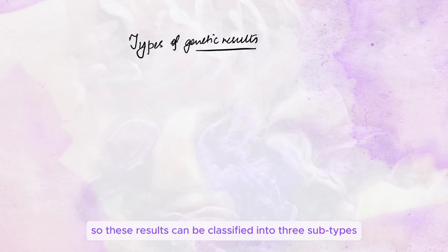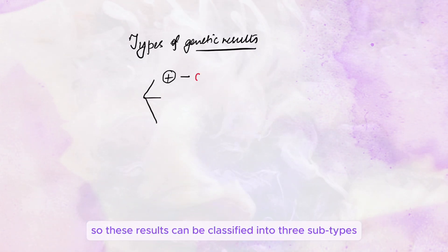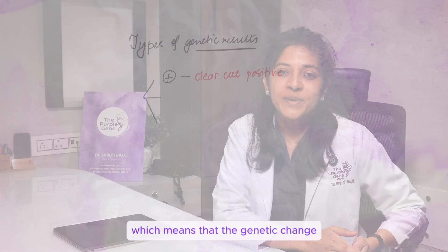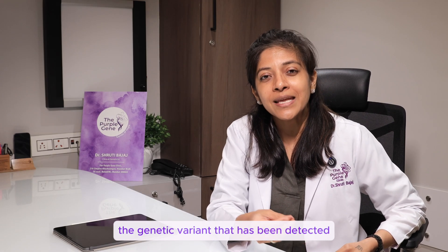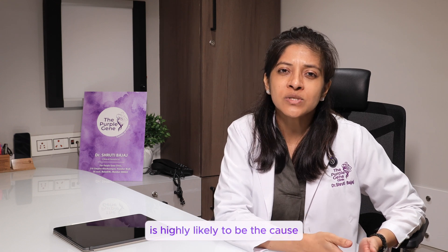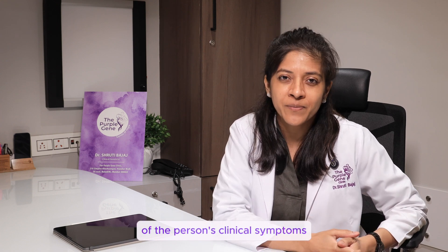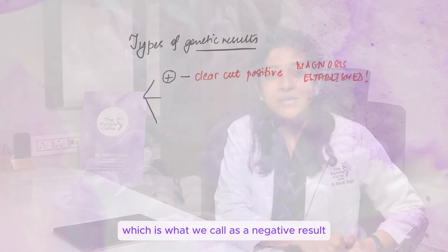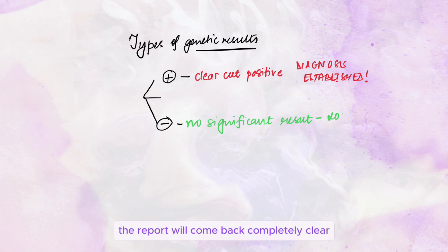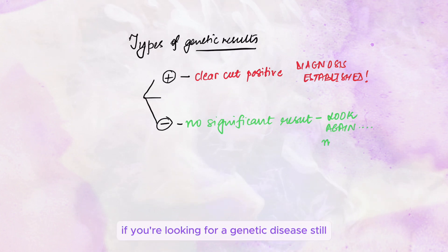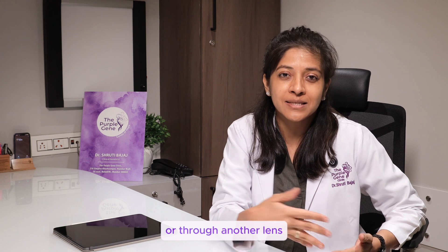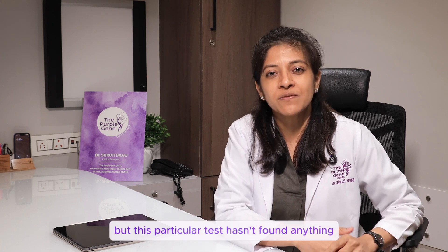These results can be classified into three subtypes. The first one is a clear-cut positive, which means that the genetic change — the genetic variant that has been detected — is highly likely to be the cause of the person's clinical symptoms. Then there's a second type, which is what we call a negative result. The report will come back completely clear, meaning that if you're still looking for a genetic disease, you may need to look through another test or another lens, but this particular test hasn't found anything.